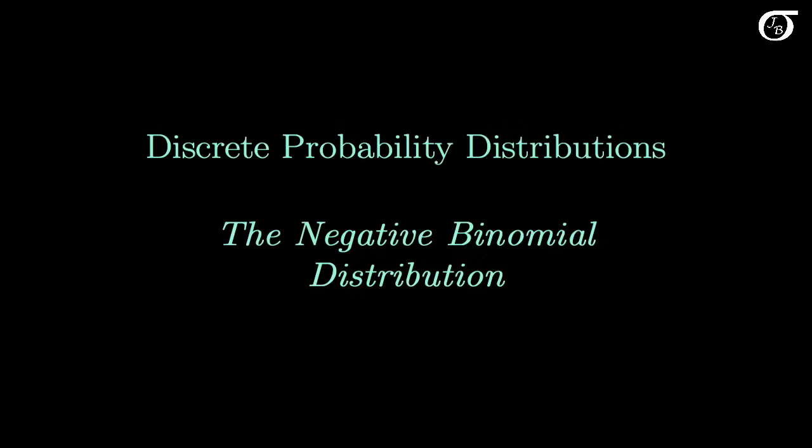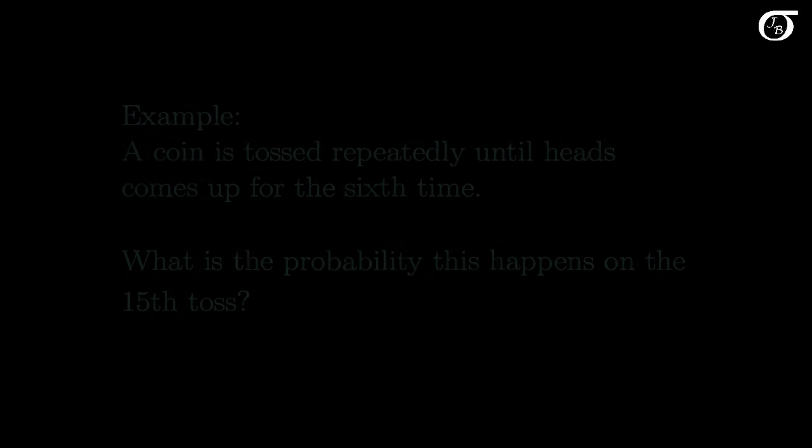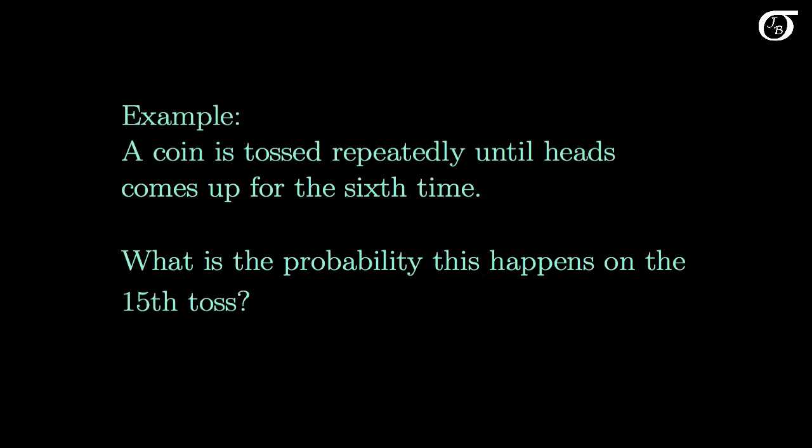Let's take a look at the negative binomial distribution, another important discrete probability distribution. Let's take a look at a simple example to start. A coin is tossed repeatedly until heads comes up for the sixth time. What is the probability this happens on the 15th toss? We could calculate this probability using the negative binomial distribution.